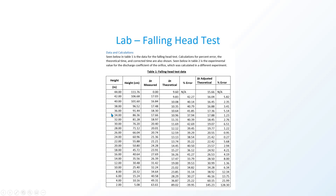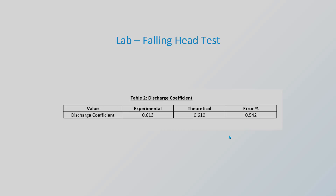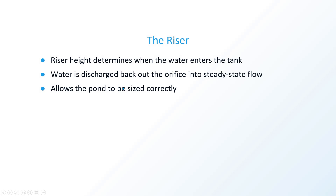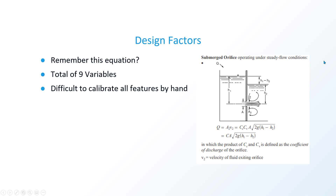This is not discharging into open air — it's discharging back into the system under steady-state flow. This would be the submerged orifice situation. In stormwater management, we use the submerged orifice equation operating under steady flow conditions. The riser height determines when water enters the tank, then it gets discharged back out through the orifice into the steady-state flow. This allows the pond to be sized correctly — without the riser it's difficult to determine that — keeping the water from rising above the pond height and maintaining equilibrium.